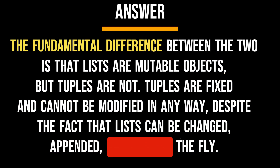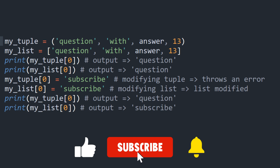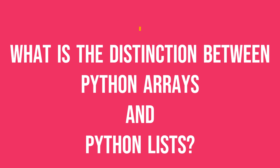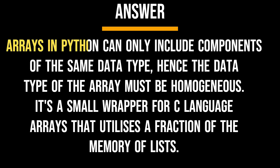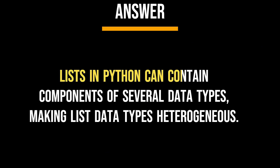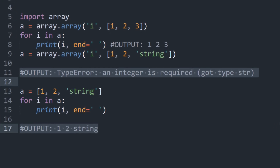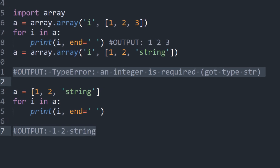Here is an example — run the following code in any Python editor to see the difference. What is the distinction between Python arrays and Python lists? Arrays in Python can only include components of the same data type, so the data type of the array must be homogeneous. It's a small wrapper for C language arrays that utilizes a fraction of the memory of lists. Lists in Python can contain components of several data types, making list data types heterogeneous. Run the following code in any Python editor to see the difference.